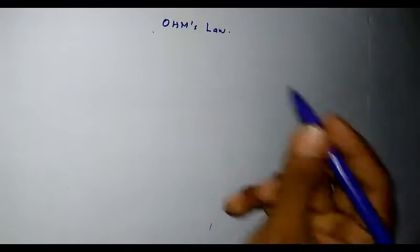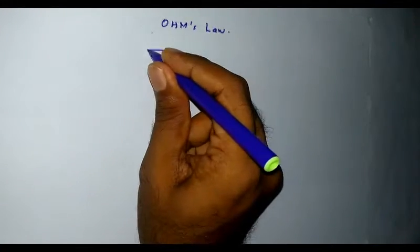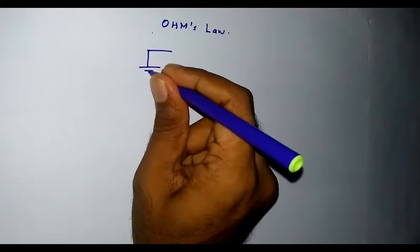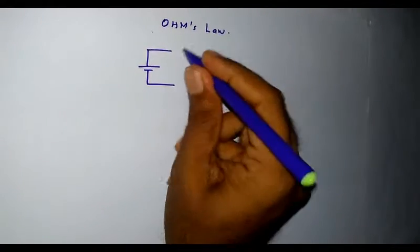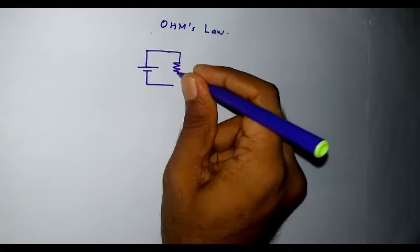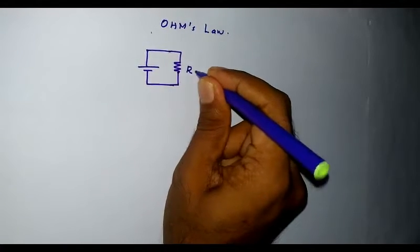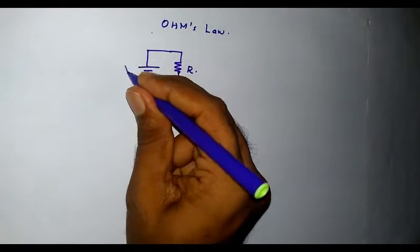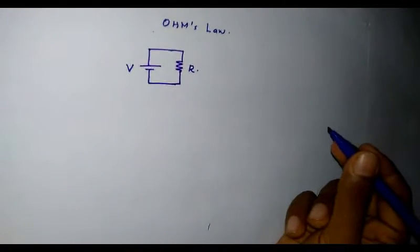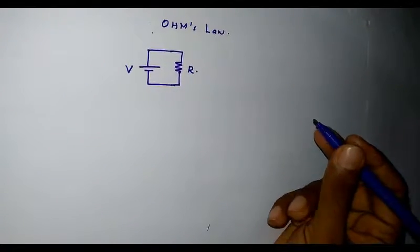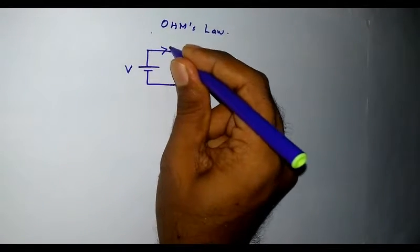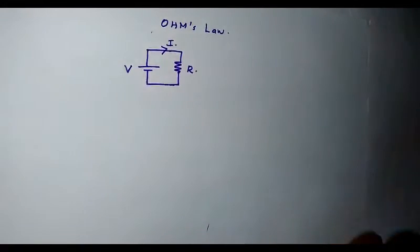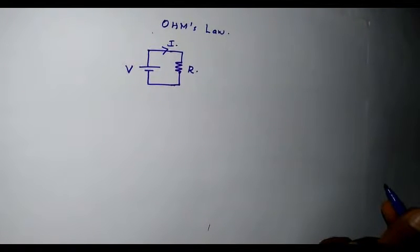Consider a closed simple electrical circuit with a cell as shown and a load resistor R. Let the EMF of the battery be V volts. We know it is a closed electrical circuit and an electric current I will flow through the circuit.